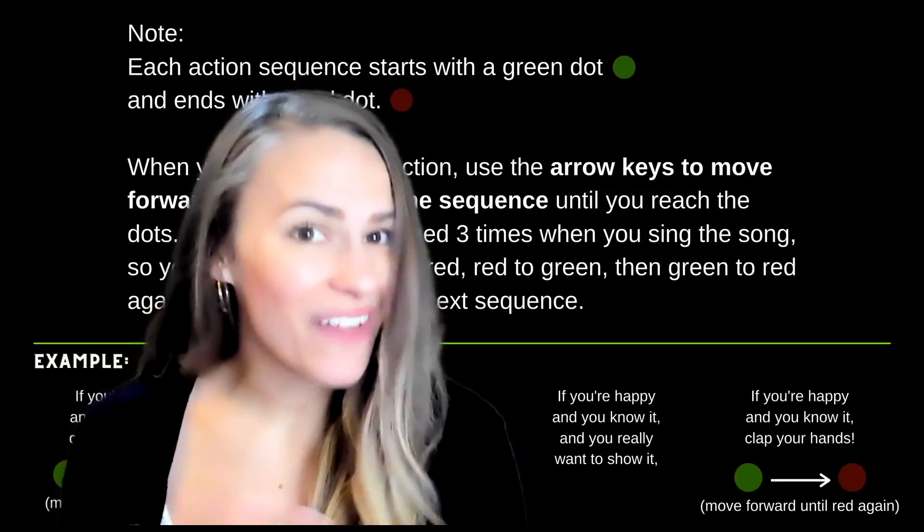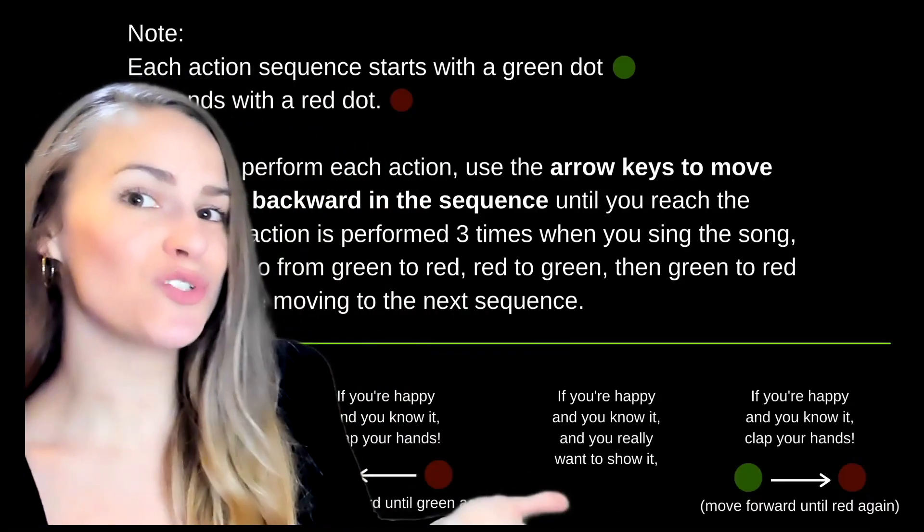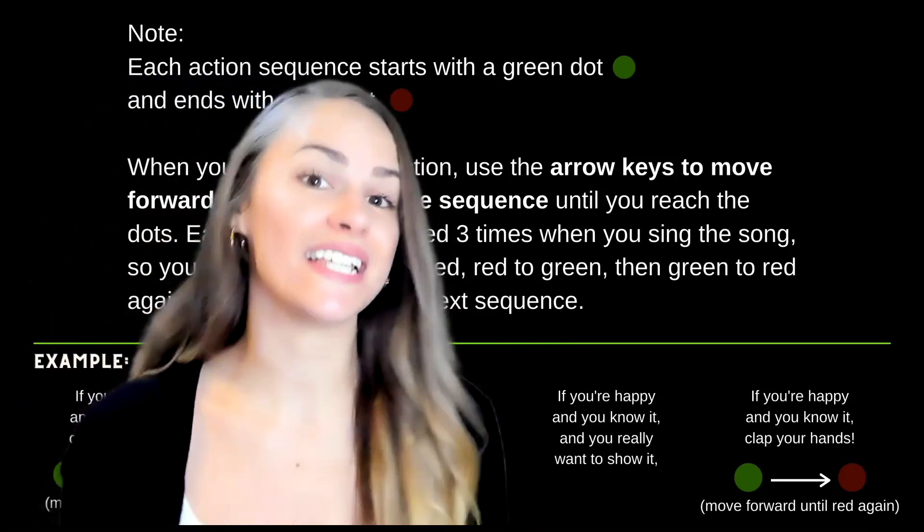I wanted to make it easy to follow along as you sing, so I included a quick instruction slide. Each action sequence starts with a green dot and ends with a red dot. When you perform each action, you will use the arrow keys to move either forward or backward in the sequence. Each action is performed three times, so you will go from green to red.